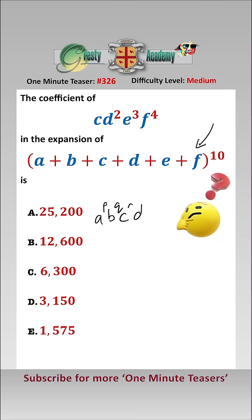b to the q, c to the r, d to the s, e to the t, f to the u is 10 factorial, because we're at the power of 10,